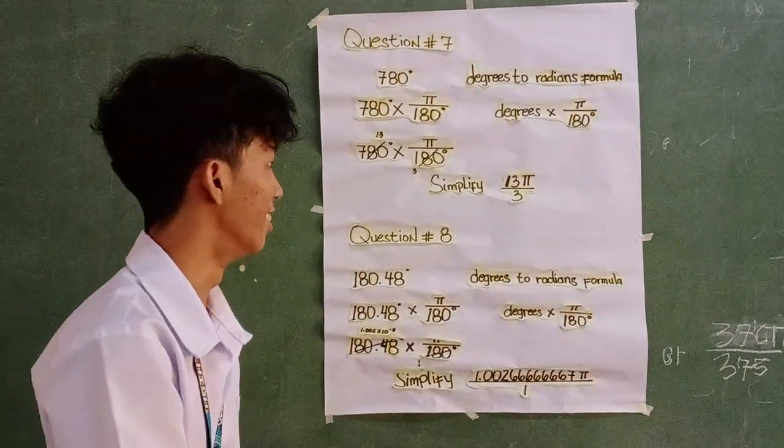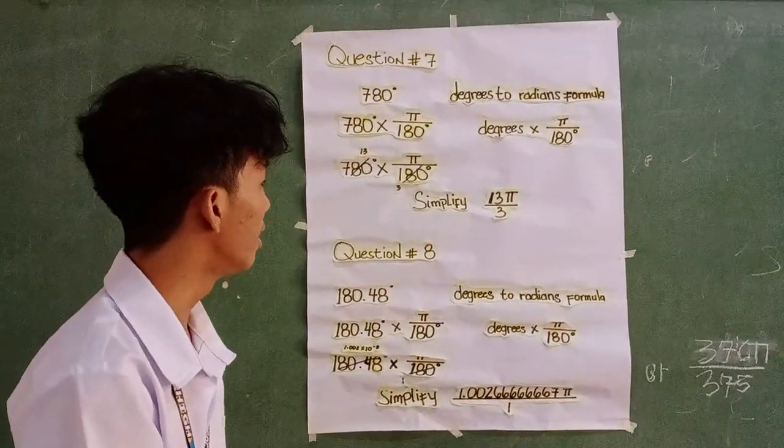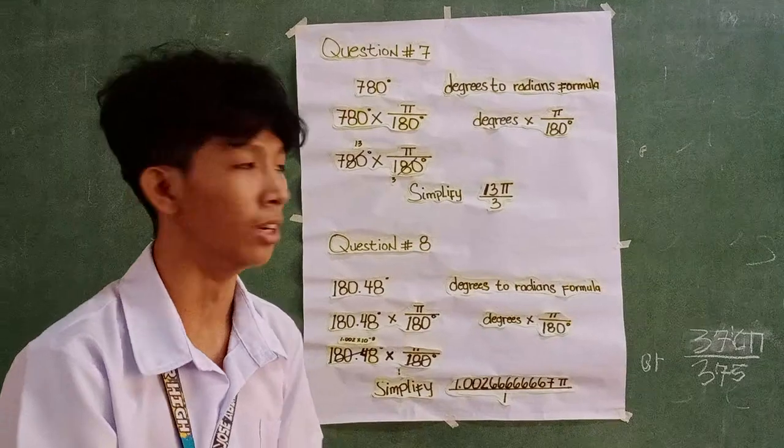And 180 divided by 45 is... wait, no. Simplifying, the answer is 13 pi over 3.